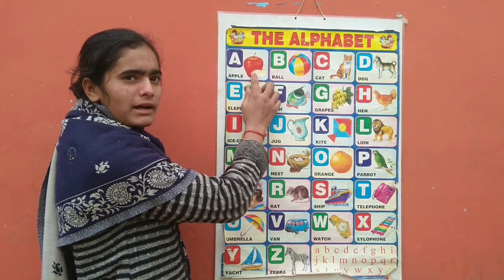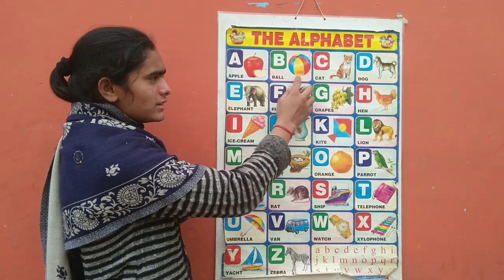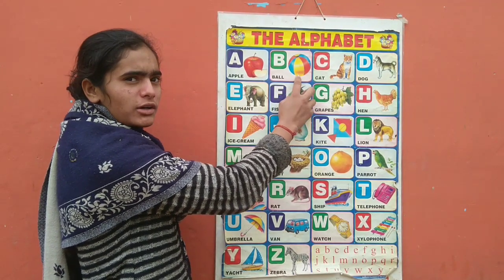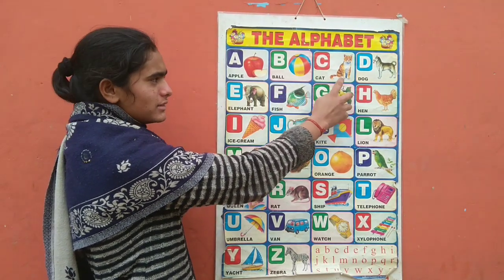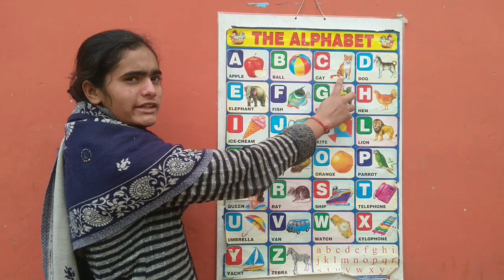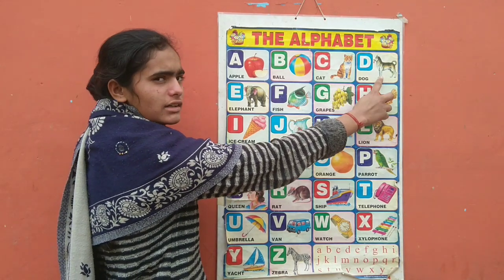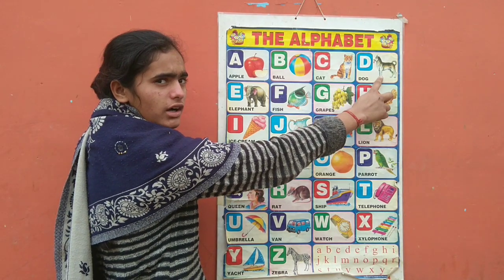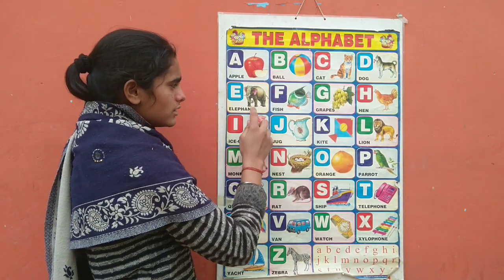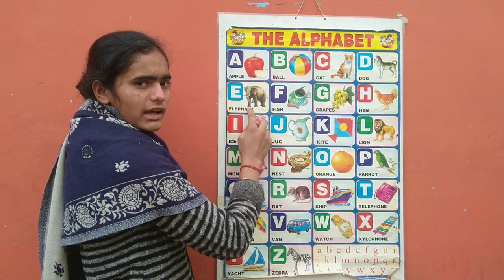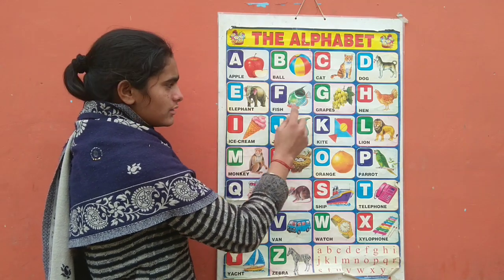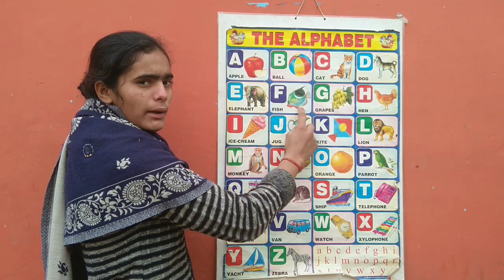A for apple, B for ball, C for cat, D for dog, E for elephant.